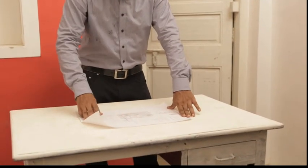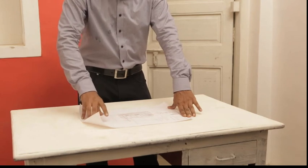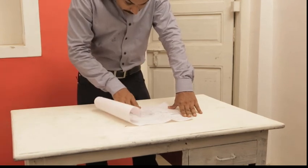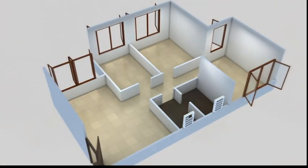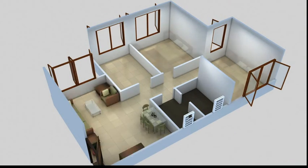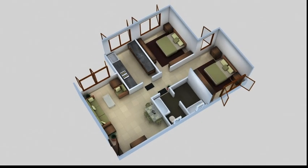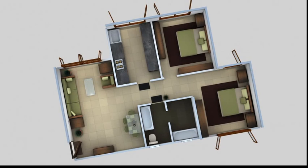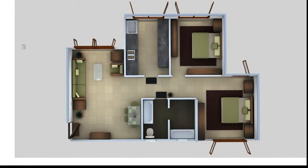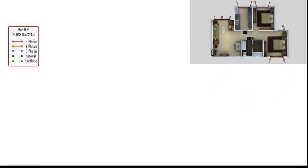This is the plan of the house, let's see it. The house has a living room, two bedrooms, a kitchen, a bathroom, and a corridor. Let me explain how I will go about doing the wiring for this house.